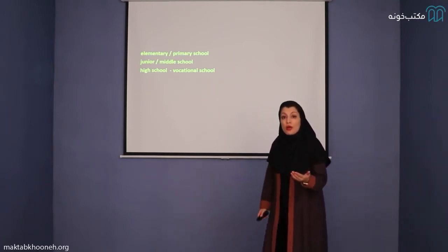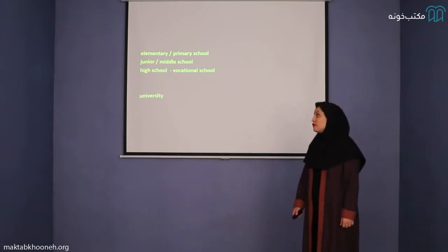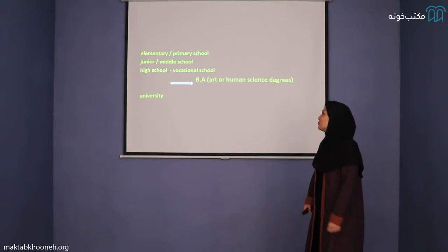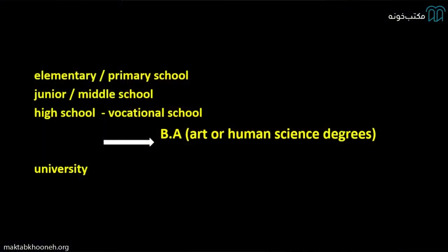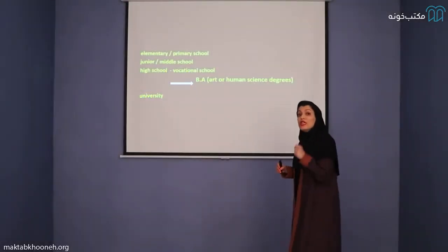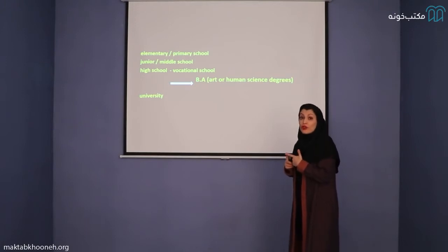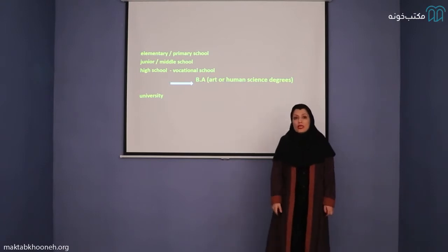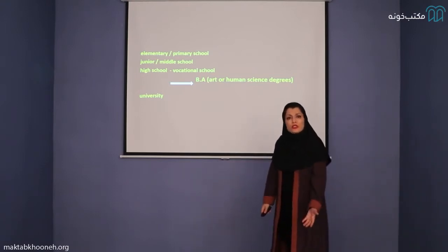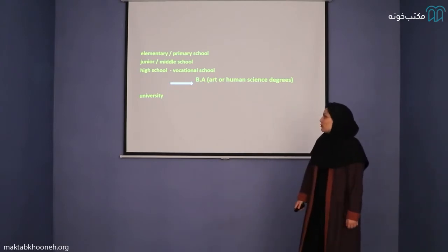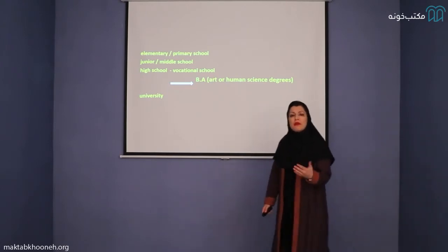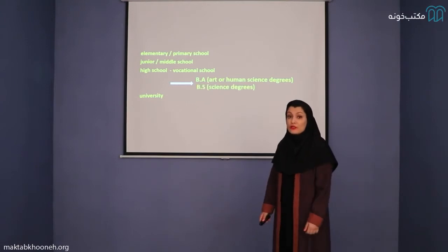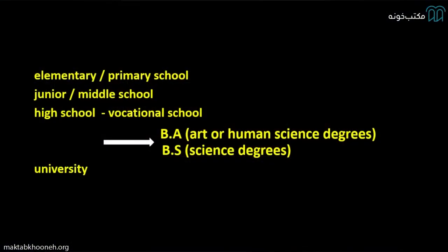After you get your diploma, you start university. When you enter university, for the first four years, you get your BA or Bachelor of Arts. You get a degree of BA or Bachelor of Arts for majors like Art or Human Science, like Psychology, Sociology, Literature. If you study majors like Medicine or Engineering, you get your BS or Bachelor of Science for science degrees.